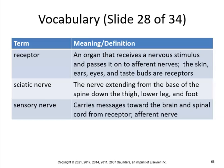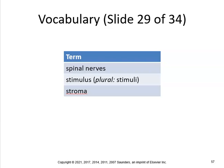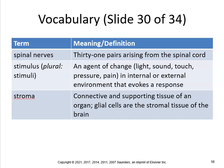Receptor, sciatic nerve, sensory nerve. Spinal nerves are 31 pairs arising from the spinal cord. A stimulus is an agent of change — light, sound, touch, pressure — an internal or external environmental factor that evokes a response. Stroma is connective and supporting tissue of an organ. Glial cells are the stromal tissue of the brain.